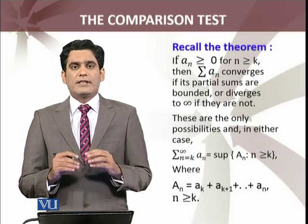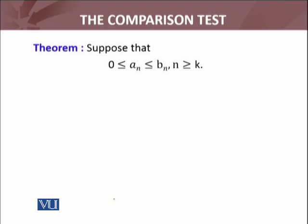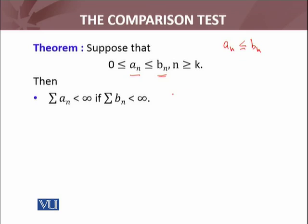Aur agar partial sum jo hai unbounded hai toh that series will diverge towards infinity. In both cases we have only two possibilities. The series of non-negative terms equals the supremum of the sequence of partial sums — agar diverge karegi toh is set ka supremum jo hai woh plus infinity hoga. Now let's state and prove the comparison test. Suppose that we have a_n greater than or equals to 0 and another term b_n, where a_n is always less than or equals to b_n. Then summation a_n will be convergent if the larger series summation b_n is convergent.